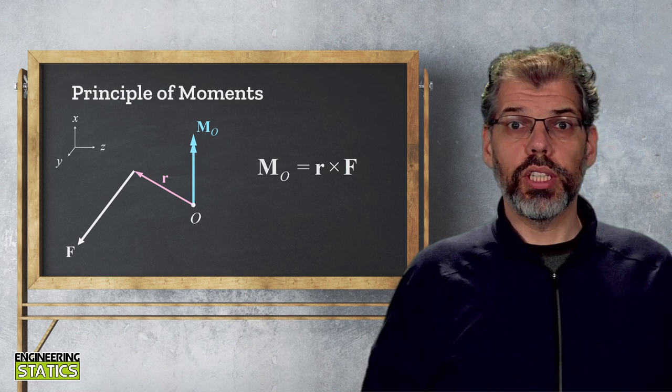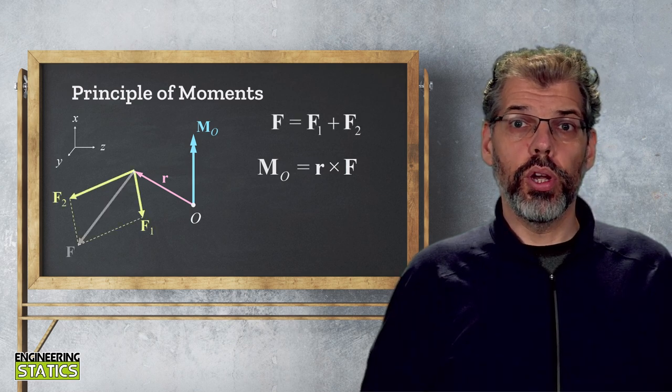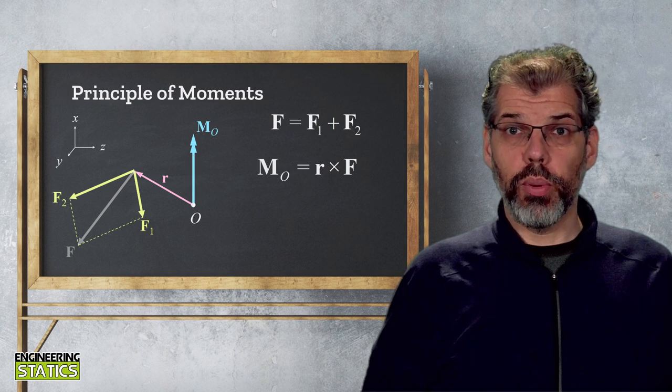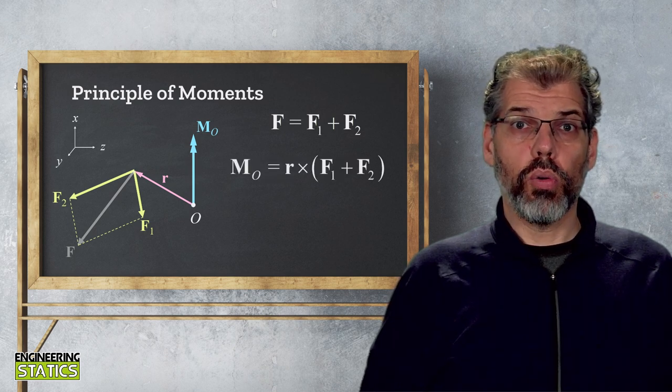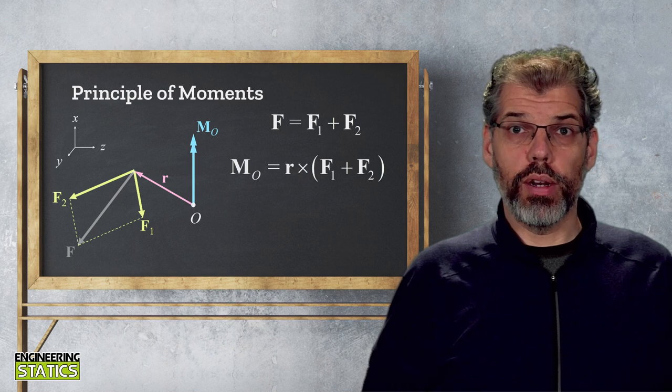we can modify our moment equation to give us M equals r cross in brackets f1 plus f2. This can then be expanded to r cross f1 plus r cross f2.